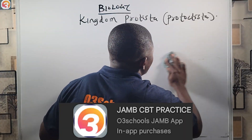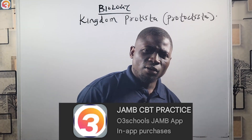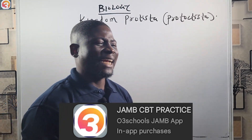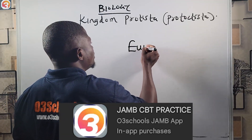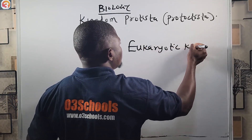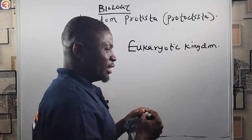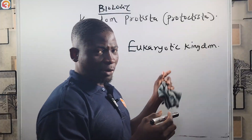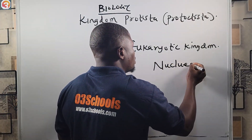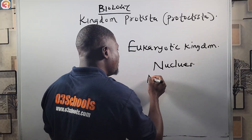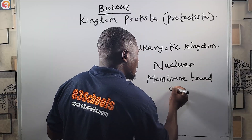Now let's get back to Kingdom Protista. The Kingdom Protista, or Protoktista, is the most diverse of the eukaryotic kingdoms. Eukaryotes are organisms that have a nucleus and membrane-bound organelles.